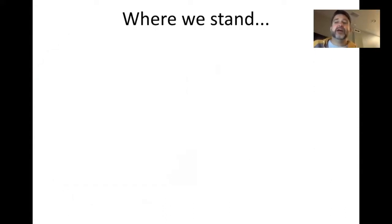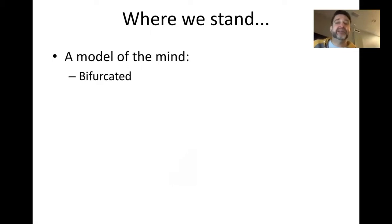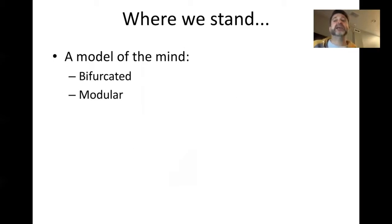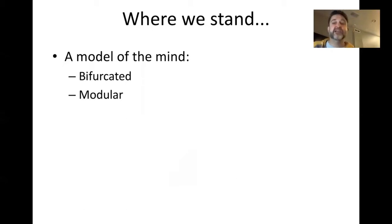I want to quickly review where we stand with the model we've developed so far. We've given a model of the mind that consists of a fundamental bifurcation between system one and system two. We've also claimed that system one is realized by modular subprocesses, which are shallow algorithmic processes that have a dedicated domain they pay attention to and a domain of answers they give. They have informational encapsulation such that they only pay attention to what's specified by the algorithm within them, and we can't look in to see how they do their processing. They're mandatory, and these define why these modules are so fast.